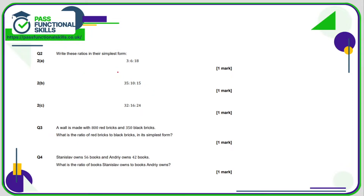Question 2a — again no calculator. We can divide all of these numbers by 3: that becomes 1, 6 divided by 3 is 2, 18 divided by 3 is 6, so 1 to 2 to 6. For part b, all numbers are in the 5 times table, so divide by 5 to get 7 to 2 to 3. For the final one, all numbers are in the 8 times table: 32 divided by 8 is 4, 16 divided by 8 is 2, and 24 divided by 8 is 3, giving 4 to 2 to 3.